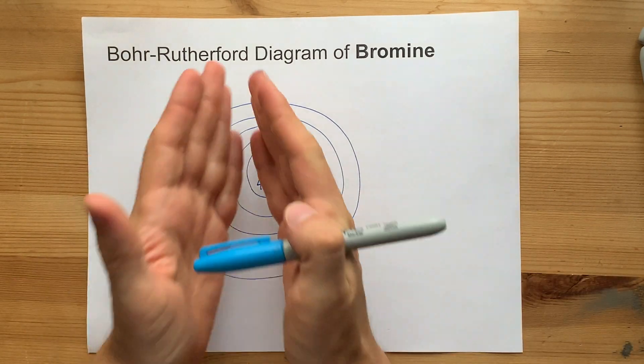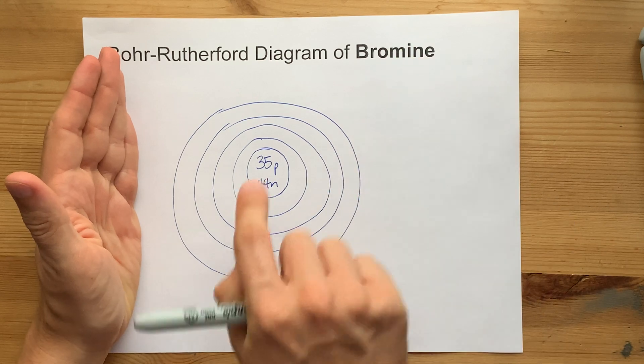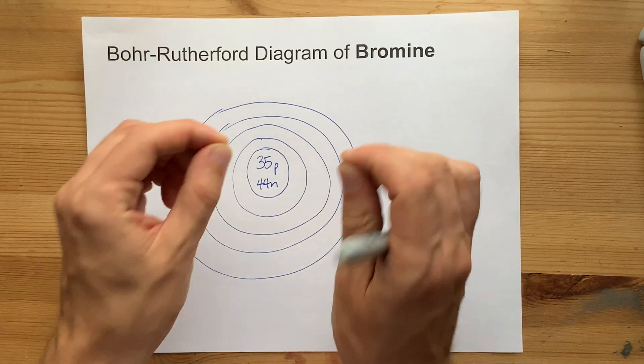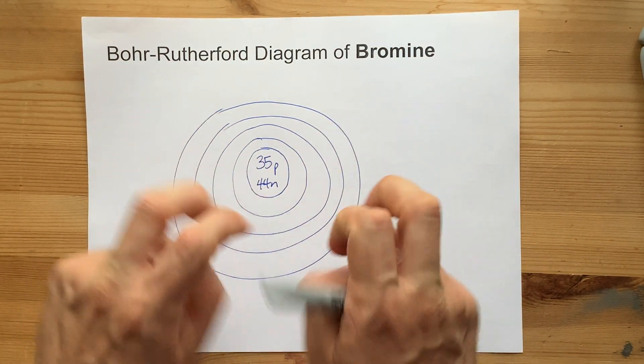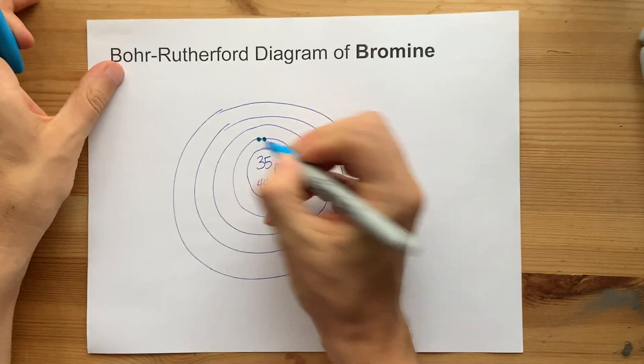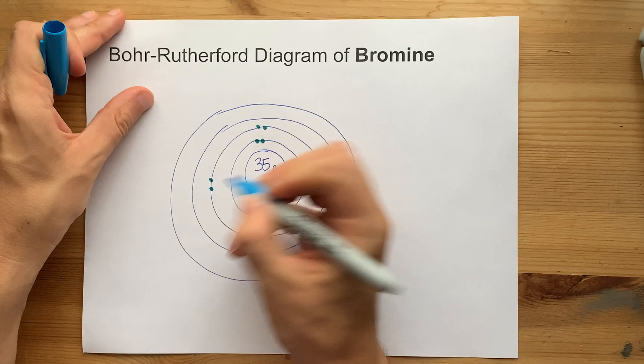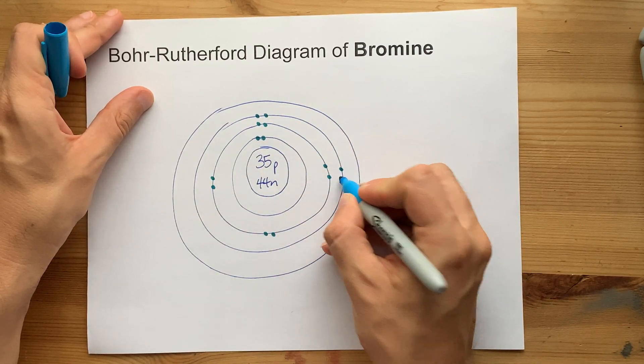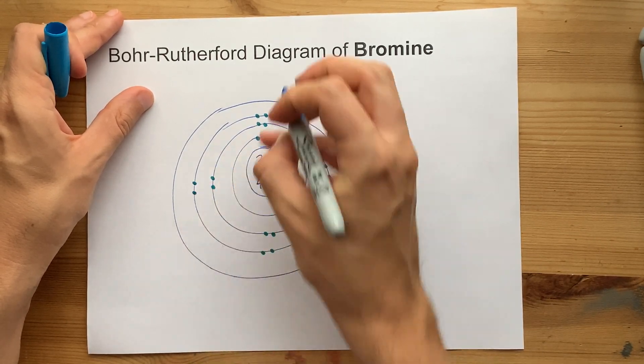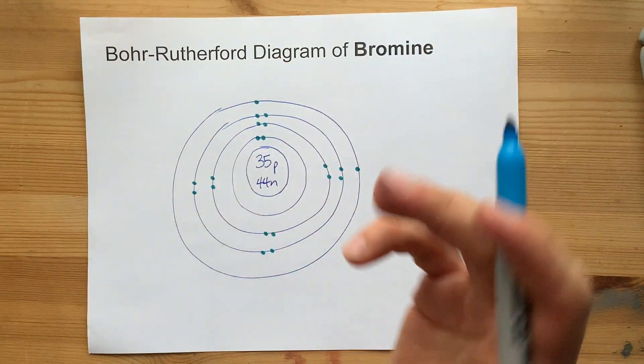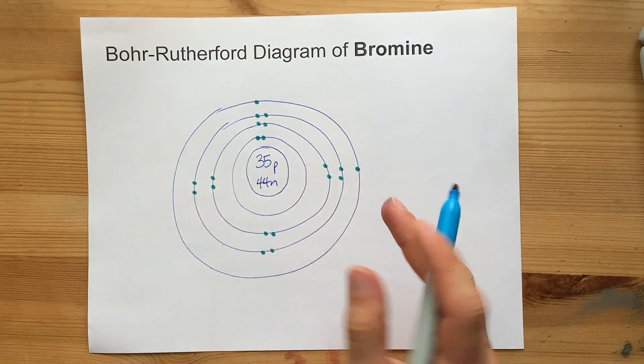Now again, the first 20 electrons, and we need 35, but the first 20 are filled as normal. Two in the first shell, up to eight in the second shell, up to eight in the third shell. And then you put two in the fourth shell. That gives me my 20. This is currently isoelectronic with calcium because we've got up to 20.